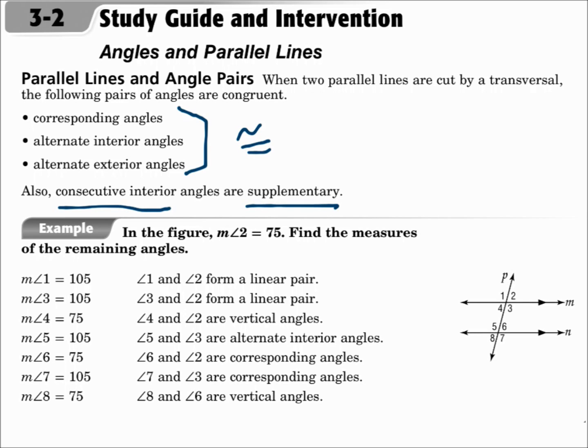Also, consecutive interior angles are supplementary. So just remember, the first three pairs are congruent, so you can make their measures equal, and consecutive interior angles are supplementary, so they'll add up to 180.